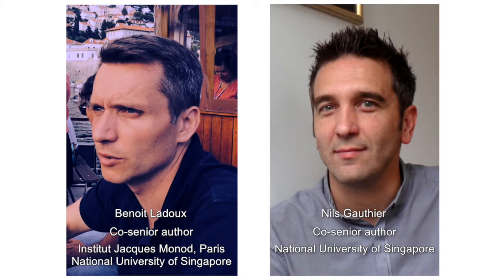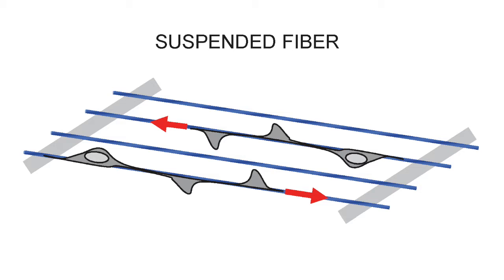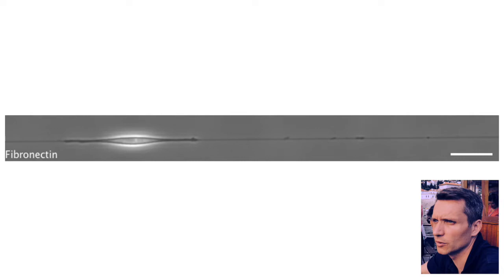Studying 3D migration in vitro is challenging, so Niels Gauthier, Benoit Ledoux and colleagues developed a simplified system in which cells migrate along suspended fibronectin-coated nanofibers that mimic 3D fibrillar matrices.